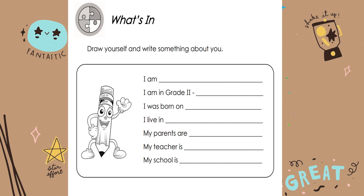For what's in, draw yourself and write something about you. Here are the sentences that you are going to fill in that will tell something more about you. Don't forget to illustrate yourself. Here are the sentences to fill in: I am blank. I am in grade 2 blank. I was born on blank. I live in blank. My parents are blank. My teacher is blank. And my school is blank.